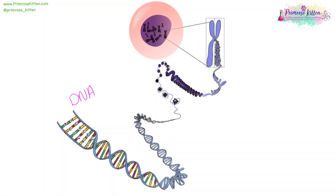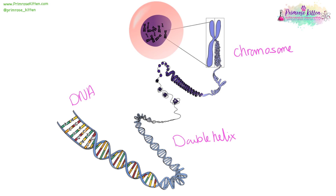DNA is a long strand of deoxyribonucleic acid, made up of lots of letters: A's, T's, C's and G's. These twist round into a double helix. This double helix is still ridiculously long, so it further twists round so that it's in a chromosome. And this chromosome is located in the nucleus of a cell.